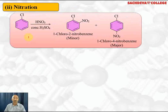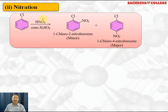Next, nitration: chlorobenzene with concentrated nitric acid and concentrated sulfuric acid gives 1-chloro-2-nitrobenzene as the minor product and 1-chloro-4-nitrobenzene (para-nitrochlorobenzene) as the major product. The electrophile is NO₂⁺ (nitronium ion), formed by the reaction of concentrated nitric acid and concentrated sulfuric acid. The role of concentrated sulfuric acid is to help generate the electrophile NO₂⁺. Major product is para.